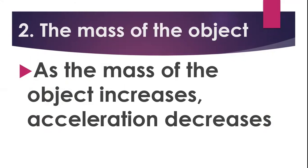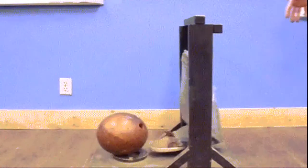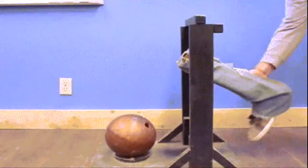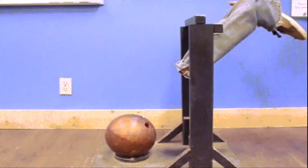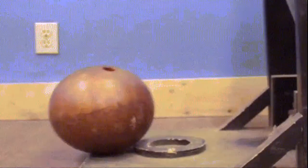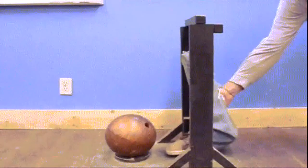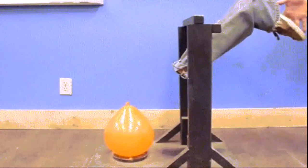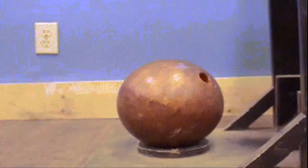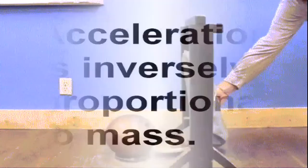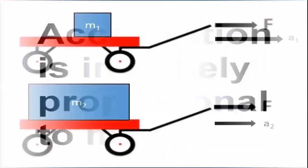As you can see in this animation, hitting a bowling ball with a heavier mass and a balloon with a lighter mass — notice how the acceleration differs between the two objects. With a greater mass, it results in lesser acceleration, and with a lighter or lesser mass, it results in greater acceleration. Acceleration is inversely proportional to the mass of the object.